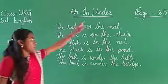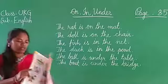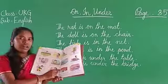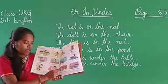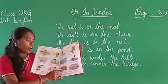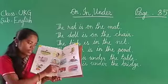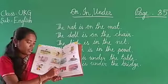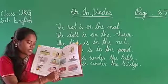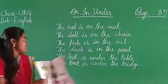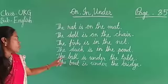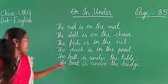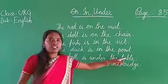Now let's see an example for under. What do you see here? A table, and a ball. Is the ball kept on the table or under the table? It is kept under the table, therefore we use under. Let's read the sentence: the ball is under the table. Please repeat: the ball is under the table.